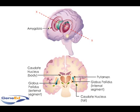Diseases that alter basal ganglia function predictably alter initiation and control of movements. Two such diseases are Parkinson's disease and Huntington's disease. Patients with Parkinson's disease suffer from a number of motor symptoms.